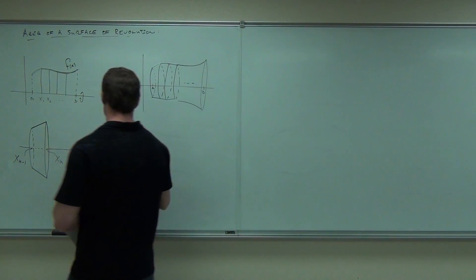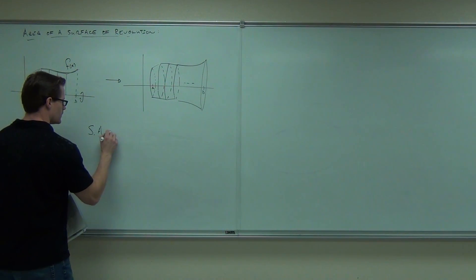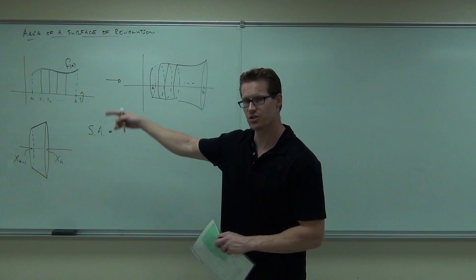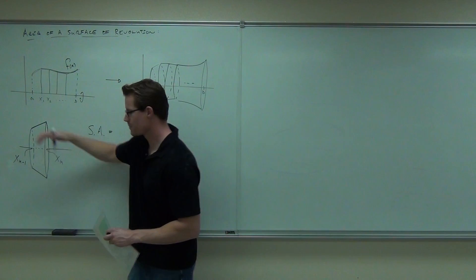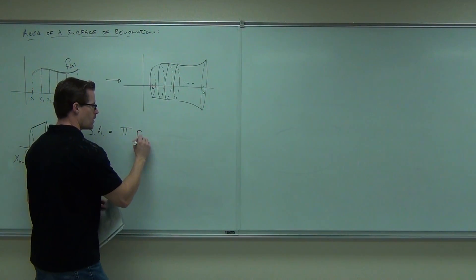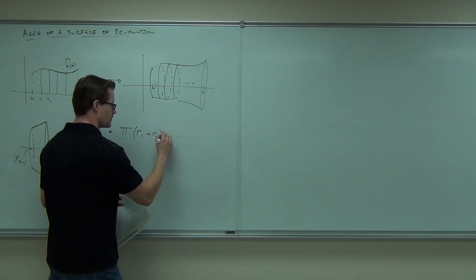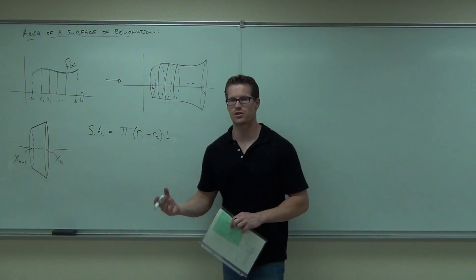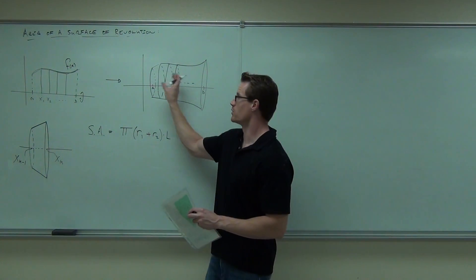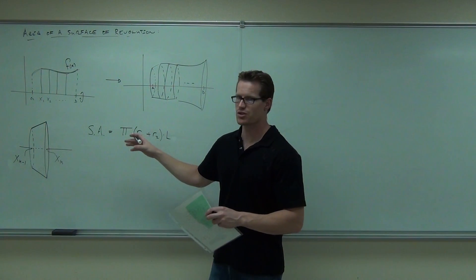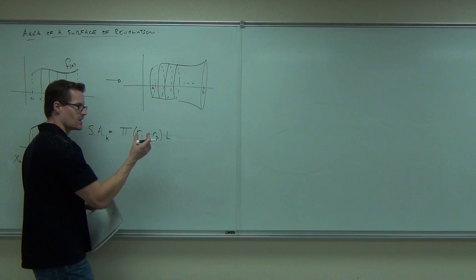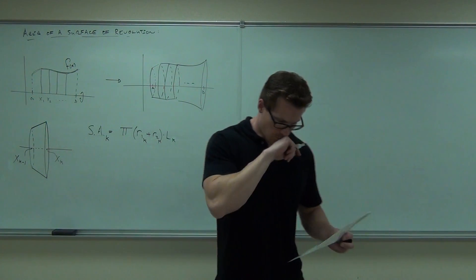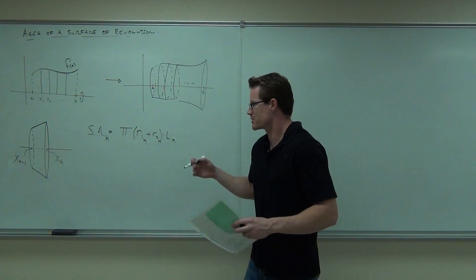In order to find the surface area, I have to give you this — and if you look it up in an advanced geometry book you'll find it's true. The surface area of a frustrum — just the outside angled region — is π times r1 plus r2 times the length. That's the formula for surface area. I'm doing this for each and every one of these little frustrums, so I'll say surface area for the kth one: π times r sub 1k plus r sub 2k, times L sub k.